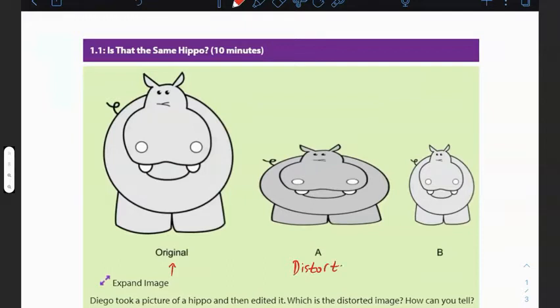Hopefully you already realize that A is distorted. Because it looks a little compressed. Right? It looks like the image kind of got squeezed down. So, it looks compressed. I would say compressed.